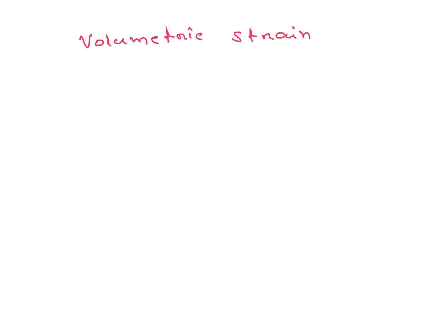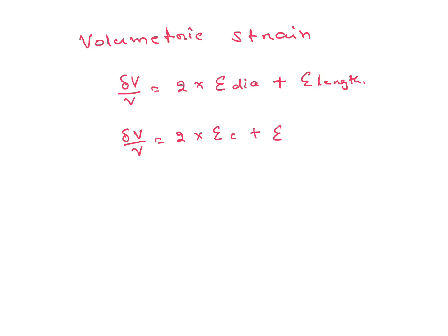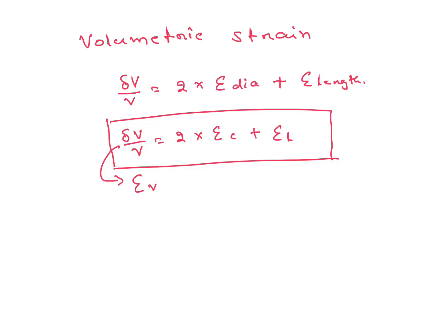Volumetric strain equals 2 times circumferential strain plus longitudinal strain. This is very, very important and has been asked 2 times in the ISRO examination. It is also important for other exams.